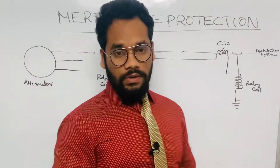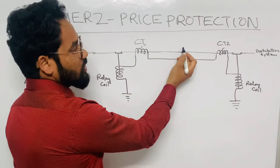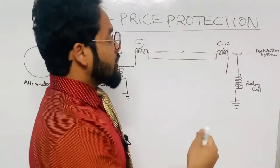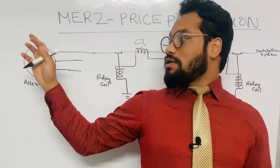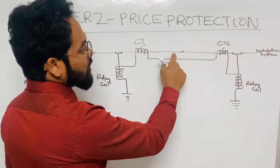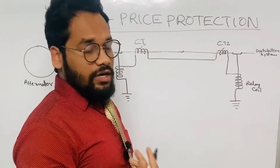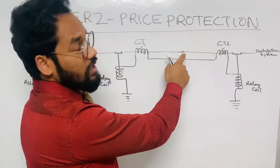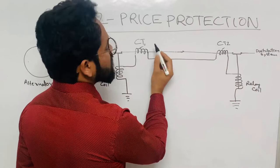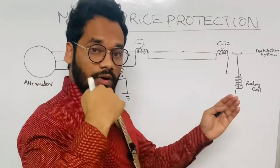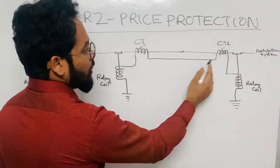Now suppose the feeder line has a fault — for example, it has short-circuited with the aircraft structure because the insulation was broken. More current will then be drawn from the alternator, which can even lead to burning of the alternator. In this fault scenario, the EMF induced in CT1 and CT2 will be different. Since the induced EMFs are different, current will start flowing in the relay circuit loop.